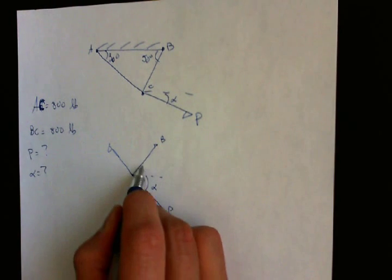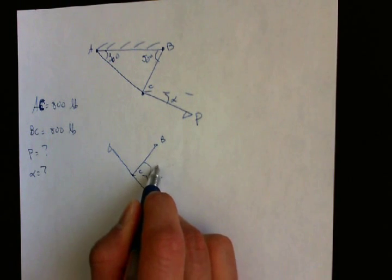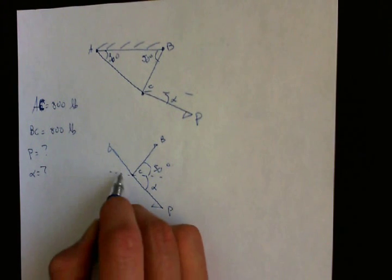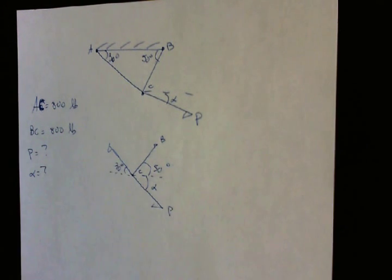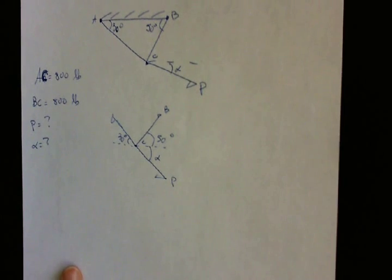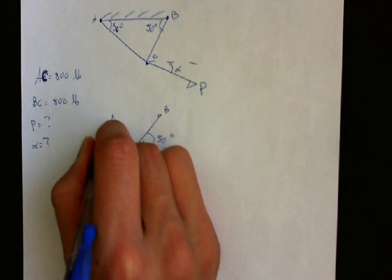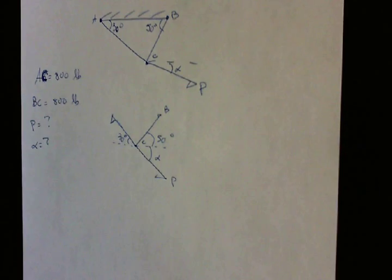So based on geometry, this angle is equal to 50 degrees and this one is 30 degrees. Okay, so the way to solve this is to sum all the forces in the X and Y component and set them equal to zero.